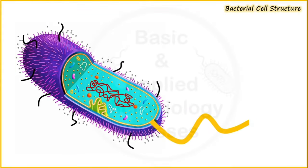With the help of this picture we will try to understand the presence of different types of layers that surround the bacterial cell, along with the presence of different types of structures present inside the bacterial cell. Let's try to understand each of these one by one.